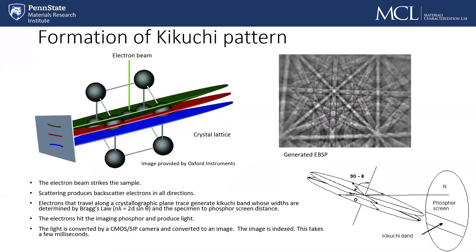How do we form these Kikuchi patterns? What you see on the left here is a single crystal lattice structure — this is a body-centered cubic material. The electron beam comes down and strikes the sample and backscattered electrons are produced in all directions. If we look particularly at one crystallographic plane, some of those backscattered electrons will satisfy Bragg's law. The ones that satisfy Bragg's law form these two Kossel cones or planes, which are then diffracted and form light on this phosphor screen. So we end up with these Kikuchi line pairs.